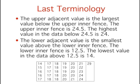Similarly, the lower adjacent value is the lowest value above the lower inner fence. The lower inner fence is 12.5, and the lowest value in the data above 12.5 is 14. Note that it is not uncommon for a lower adjacent value to be the lowest value in the data.